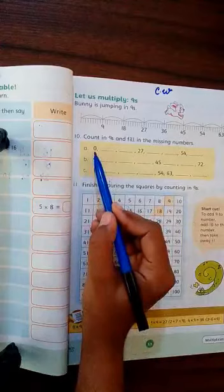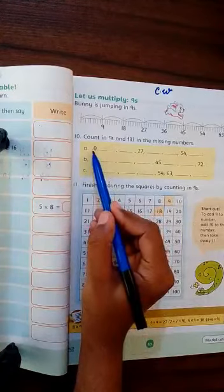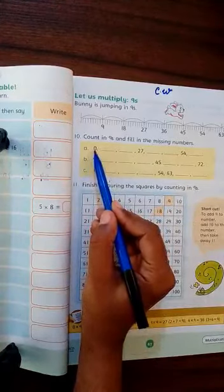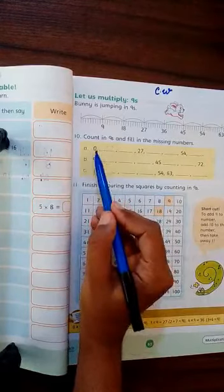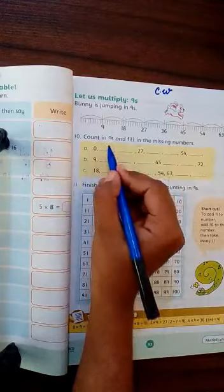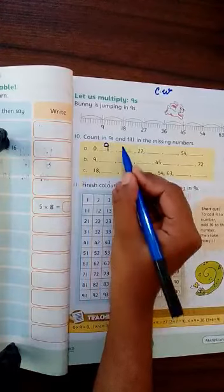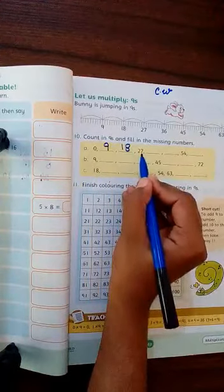And they have told the starting point where you have to start. 9 times 0 is 0, and you have to write the same. 9 times 0 is 0, 9 times 1 is 9, 9 times 2 is 18, 9 times 3 is 27.